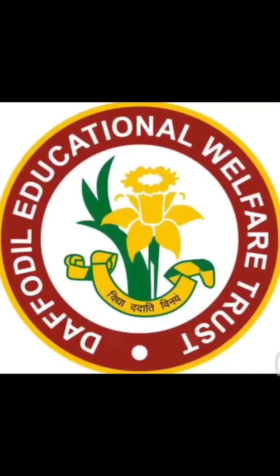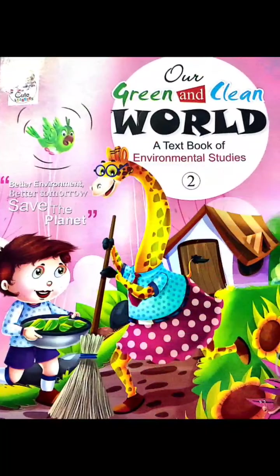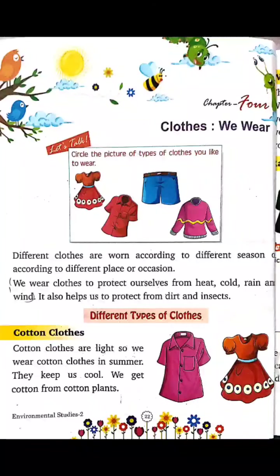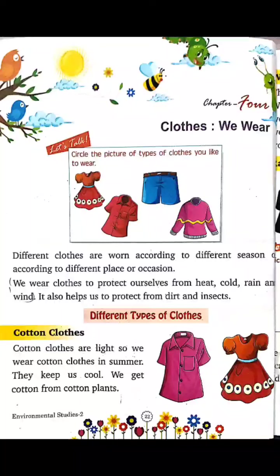Hello everyone, I hope you all are doing good. Today we will read chapter 4 from your EBS book. The name of the chapter is 'Clothes We Wear.' Today we will talk about the different types of clothes.